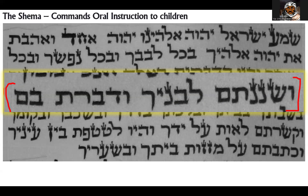Does this mean the only thing a Jew is supposed to instruct his children is just what's exactly written? What if they ask questions? How do you do that? What does that mean? Someone who speaks modern Hebrew reading this with no knowledge of the Torah would have to be instructed that the word is 've'ohavta' — based on ancient Hebrew, based on the ta'amim — and not 've'ahavta,' because 've'ahavta' is past tense while 've'ohavta' is present-future tense.